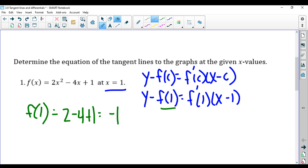Then we have to figure out what f prime of 1 is. So first we have to figure out what f prime of x is. 4x minus 4. So that gives you f prime of 1 equals 4 times 1 minus 4 which is 0.